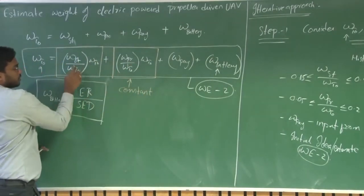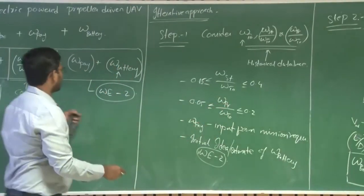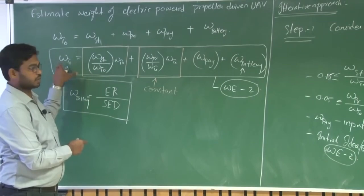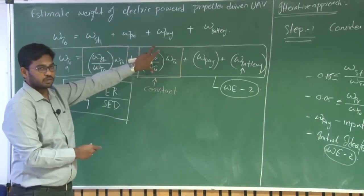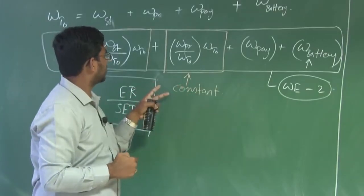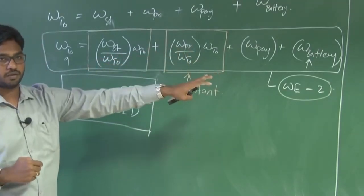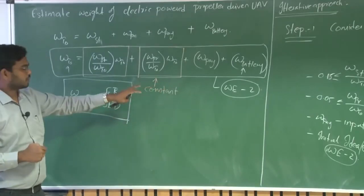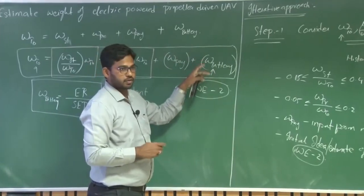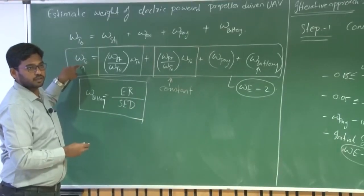During the first iterations, once you assume the value of structural weight ratio multiplied by the initial W takeoff from the historical database, fix these two values — do not iterate them. The only thing we are trying to change is the battery weight. While considering these as constant, what we are assuming is that the structural weight and propulsion weight are good enough to satisfy the UAV with the current requirement. So that is the initial iteration to start with.